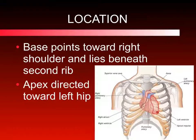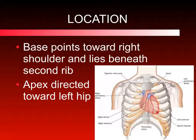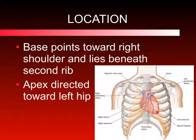The heart is located in the chest cavity, specifically in the space called the mediastinum. The base is the widest portion of the heart and it sits at the second rib. The apex is the pointy part of the heart, located at the fifth rib level, and the tip points toward the left hip, so it sits at an angle.